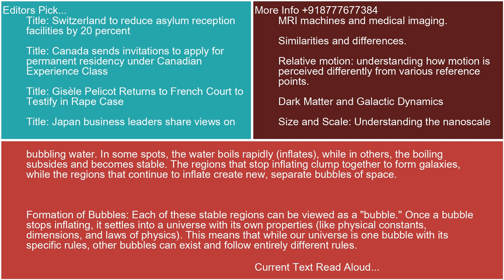Formation of bubbles: Each of these stable regions can be viewed as a bubble. Once a bubble stops inflating, it settles into a universe with its own properties, like physical constants, dimensions, and laws of physics. This means that while our universe is one bubble with its specific rules, other bubbles can exist and follow entirely different rules.